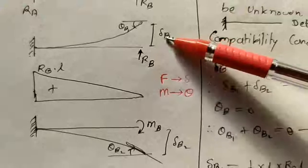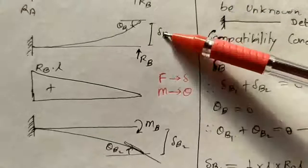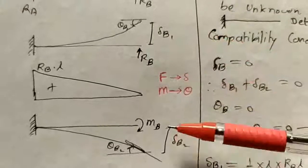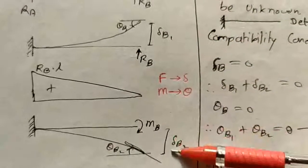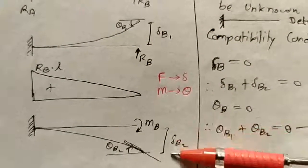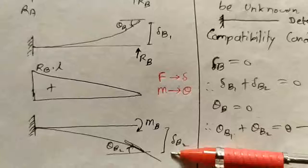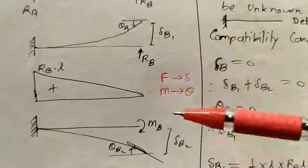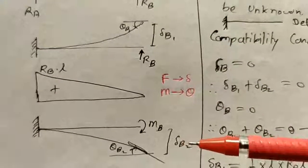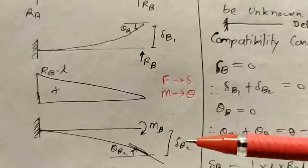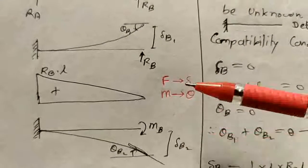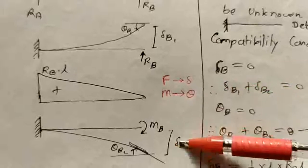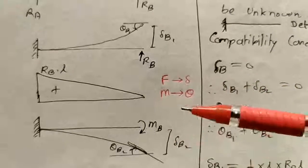Delta B1 is treated as positive. Delta B2 will be negative because it is going in a downward direction, which is opposite to delta B1. That is why delta B2 will be negative.